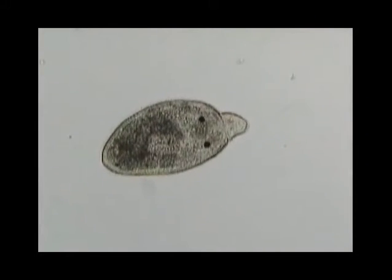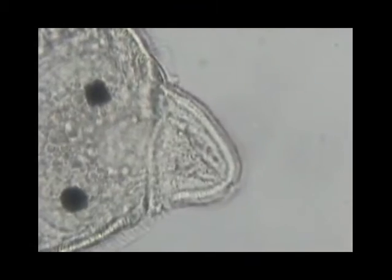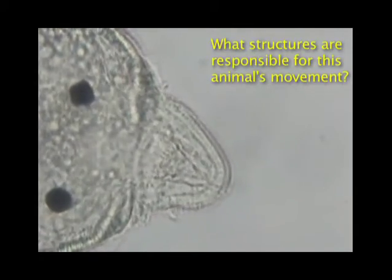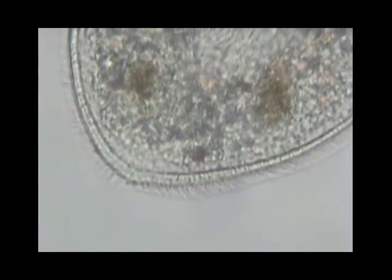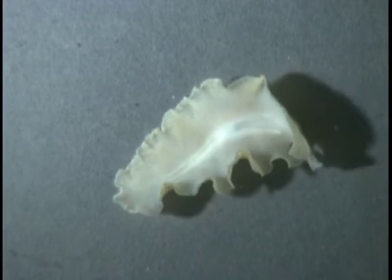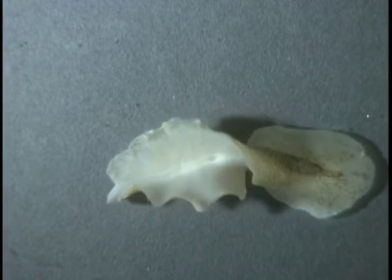Notice how this flatworm crawls. The two pigmented spots detect light. This is the adult form of a marine flatworm.